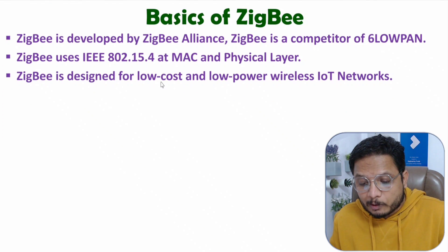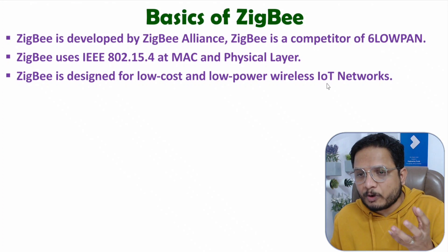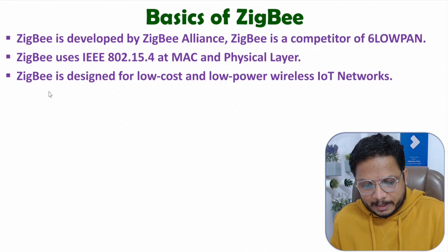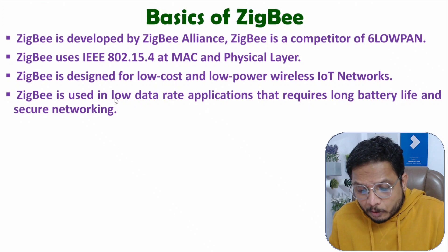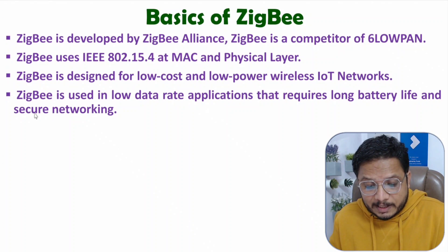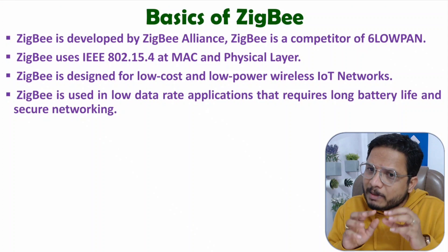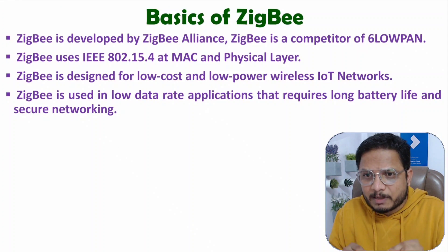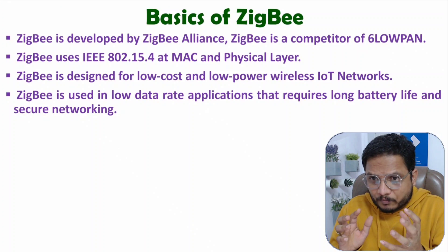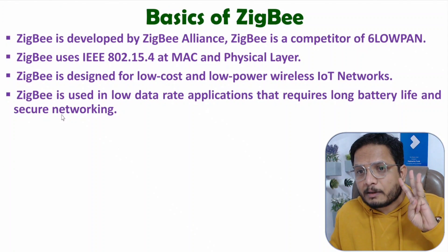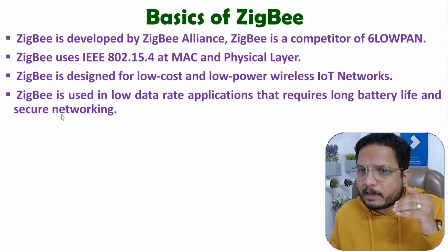ZigBee is designed for low-cost and low-power wireless IoT networks. In IoT, we need low-cost and low-power wireless networks, and that can be achieved with ZigBee. ZigBee is used in low data rate applications that require long battery life and secured networking. When forming a network with ZigBee, data rate is not the primary concern — the highest data rate is 250 kbps. The main concern is longer battery life and low-power personal area networking.